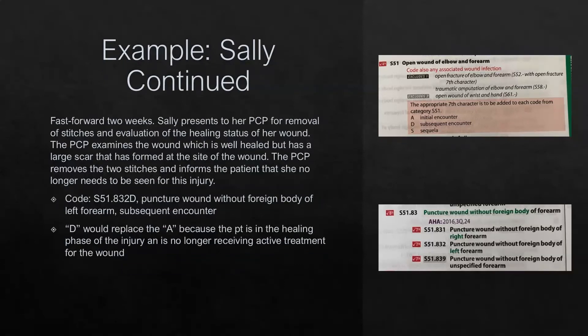Example continued: fast forward two weeks. Sally presents to her PCP or primary care provider for removal of stitches and evaluation of the healing status of her wound. The PCP examines the wound, which is well healed, but has a large scar that has formed at the site of the wound. The PCP removes the two stitches and informs the patient that she no longer needs to be seen for this injury. We can see that we still have category S51 telling us we have to use one of the following seventh characters. For this case, we're still going to assign the same code, S51.832. However, we will be changing the seventh character to D because this is a subsequent encounter — she's no longer receiving active treatment for the wound.